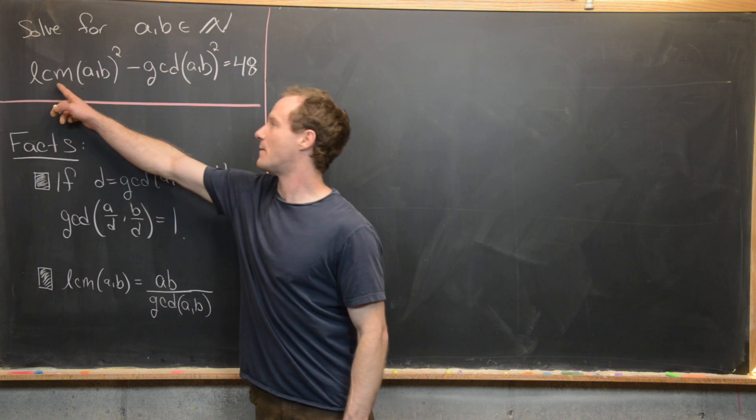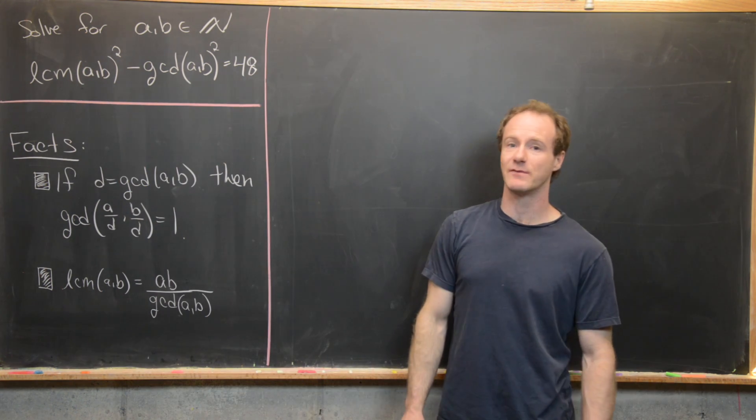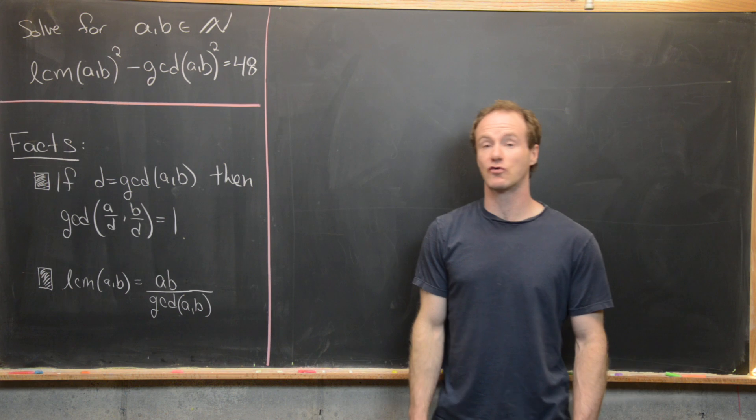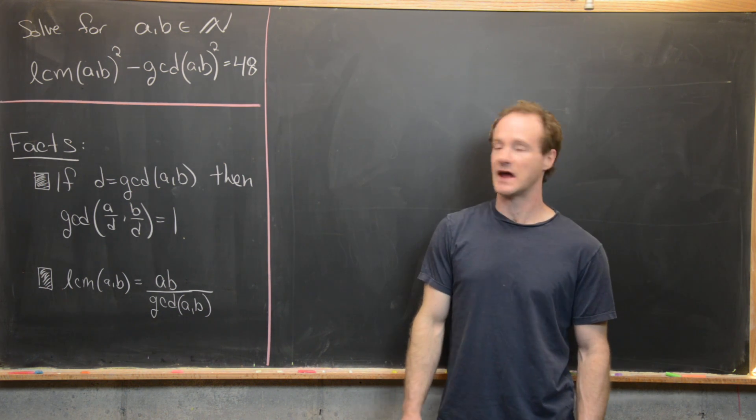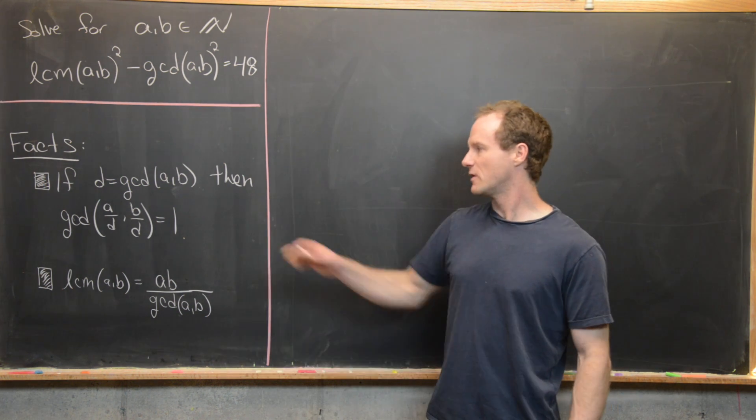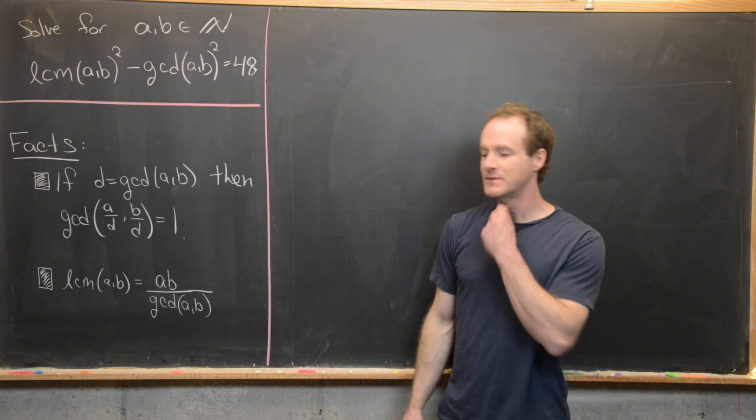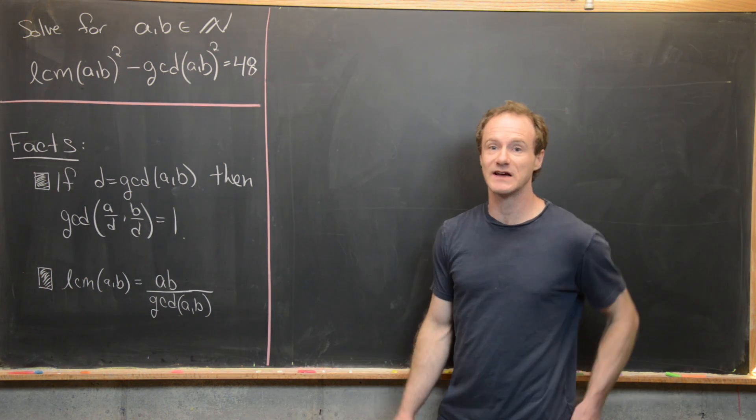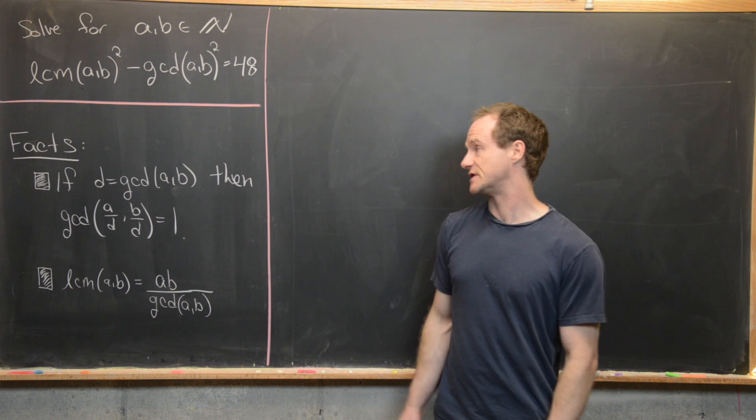Let's recall by the LCM, I mean the least common multiple of A and B. And then by the GCD, I mean the greatest common divisor of A and B. And here are a couple of facts from elementary number theory. I've got a whole course worth of videos on elementary number theory on one of my playlists, so check that out if you're interested.